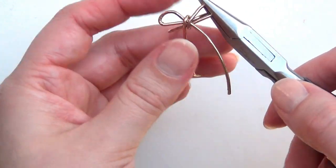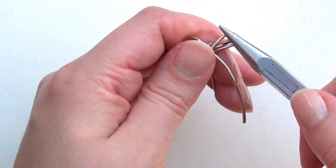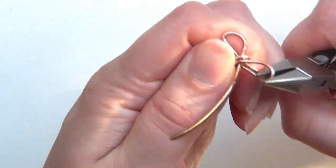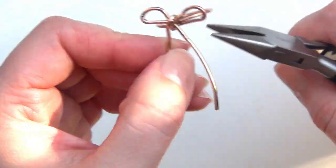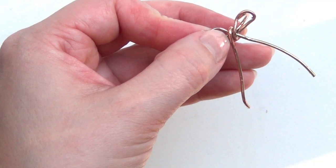Once you've gotten the knot as tight as you want it, you can bend the bows and the ends of the bows to the shape that you like, then cut off the excess wire.